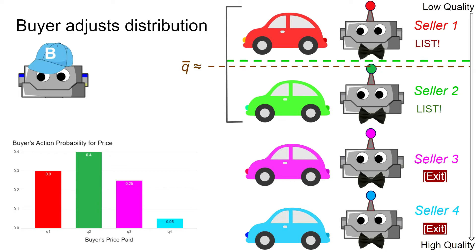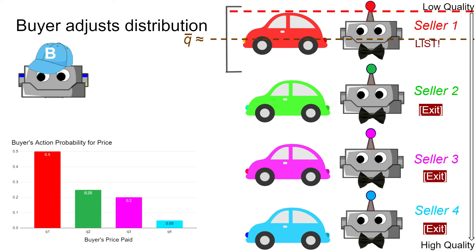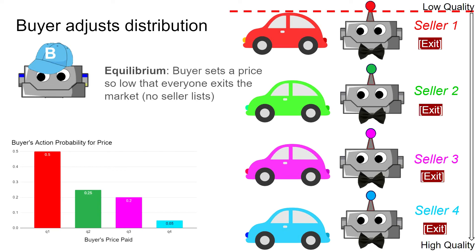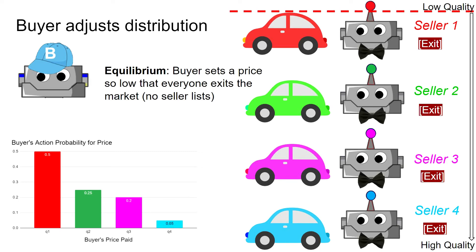As the buyer pays less, more sellers decide to exit the market because they realize that listing their car is unfavorable. As the sellers exit the market, the buyer adjusts the average price of the cars listed to be even lower. Realizing the average quality is lowered, the buyer shifts his distribution to favor proposing a lower price. Here, the buyer proposes a minimum price, and so seller 1 exits as well. This is the equilibrium of the Market for Lemons game: the buyer sets a price so low that all the sellers are forced to exit the market in order to avoid losses, and the buyer doesn't get a car.